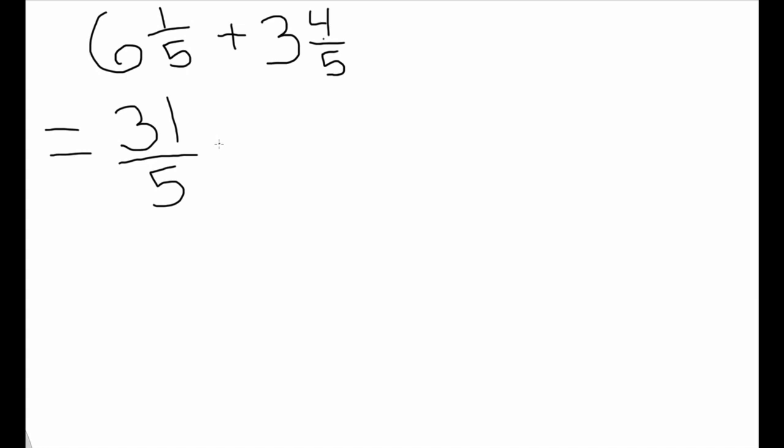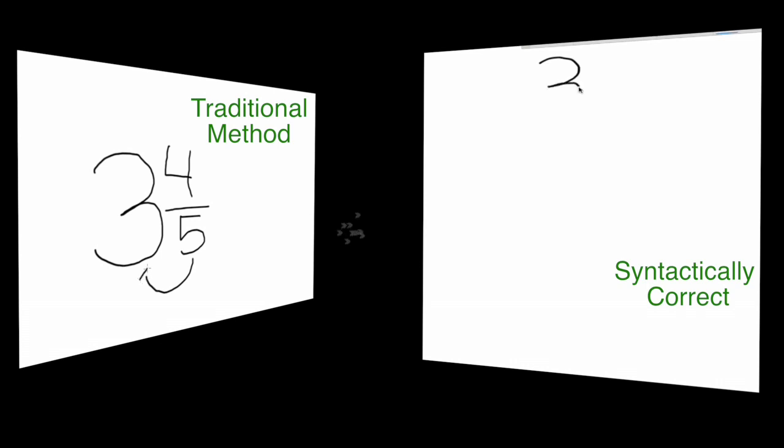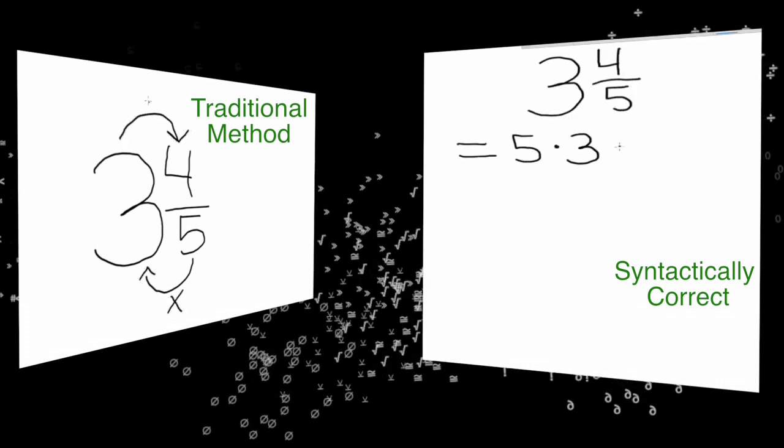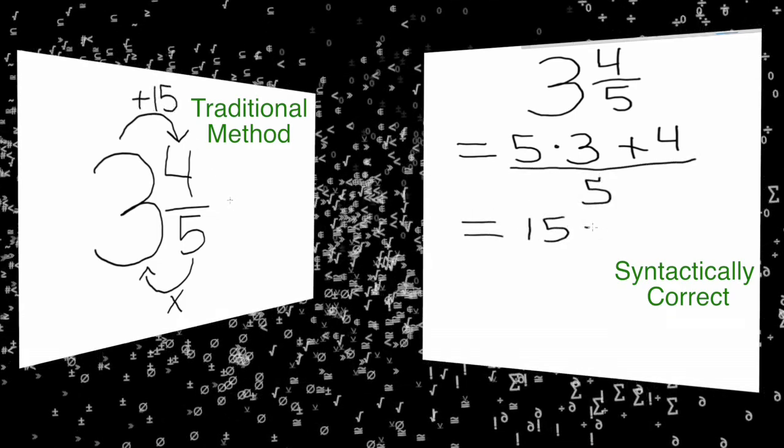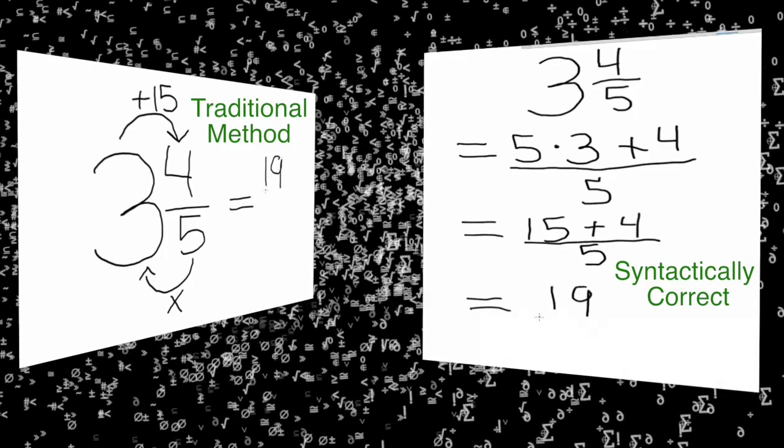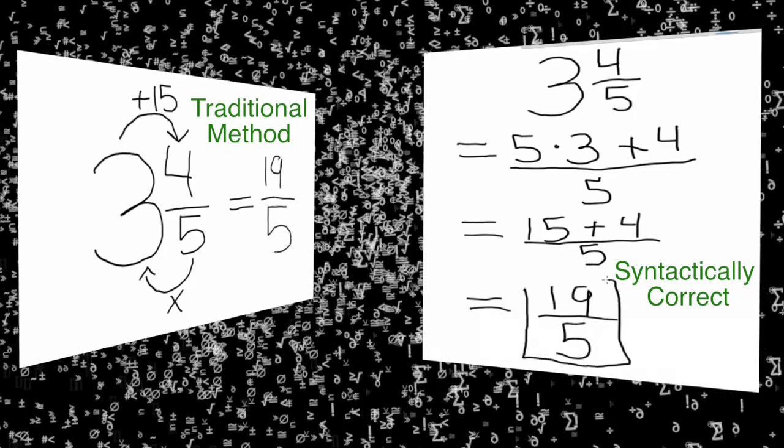We now need to express three and four-fifths as fifths. Again, we would multiply the denominator five and the whole number three. Take that product and add it to the numerator four. Your improper fraction will be nineteen-fifths.